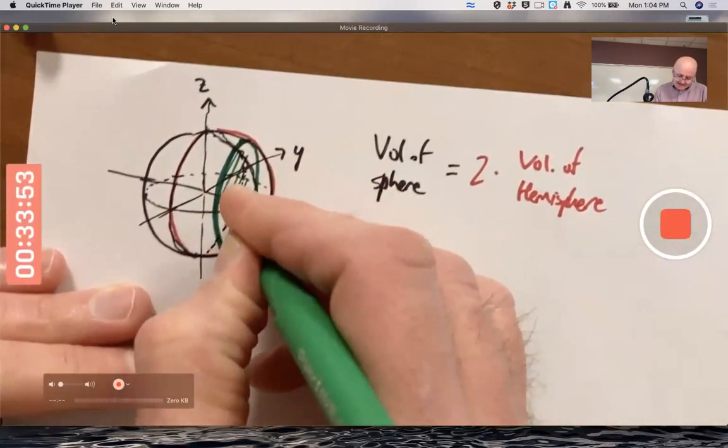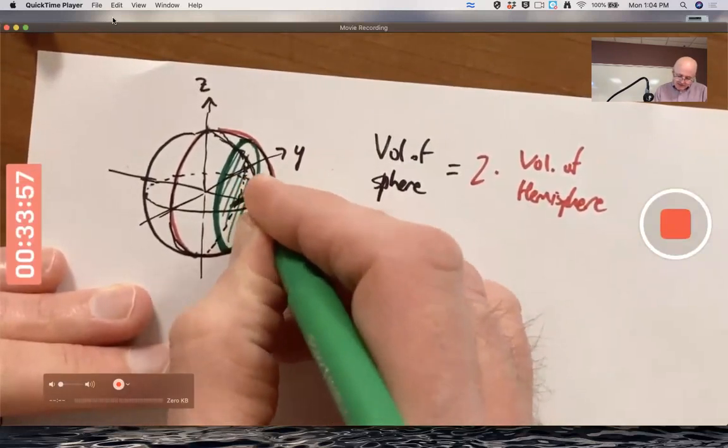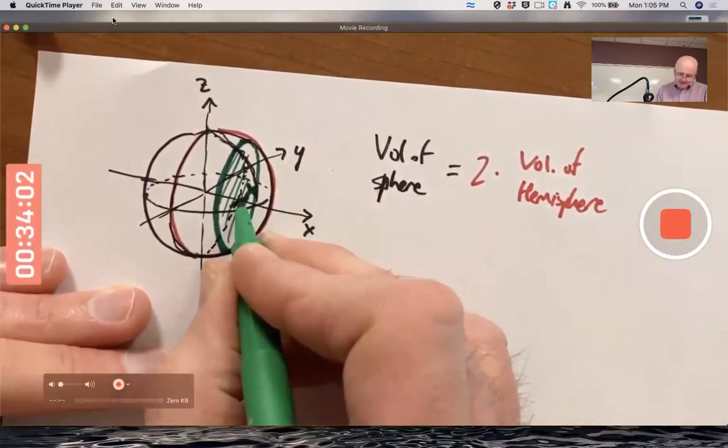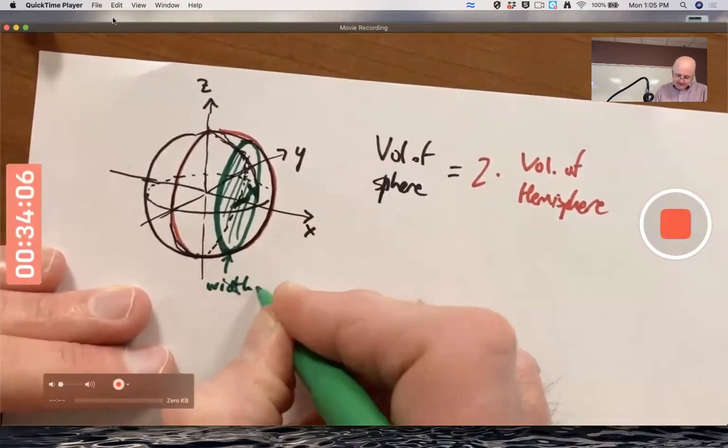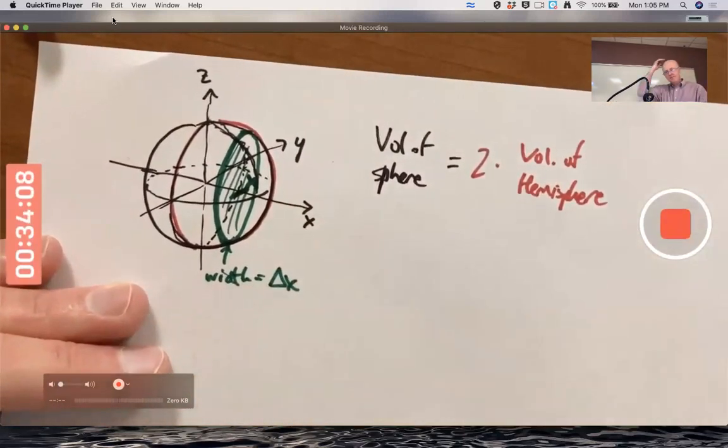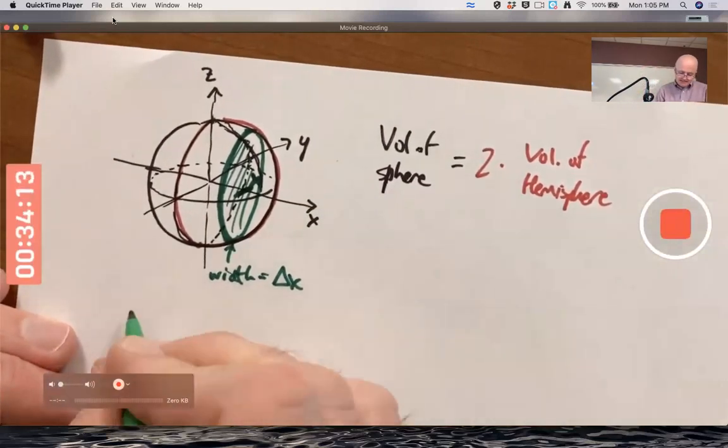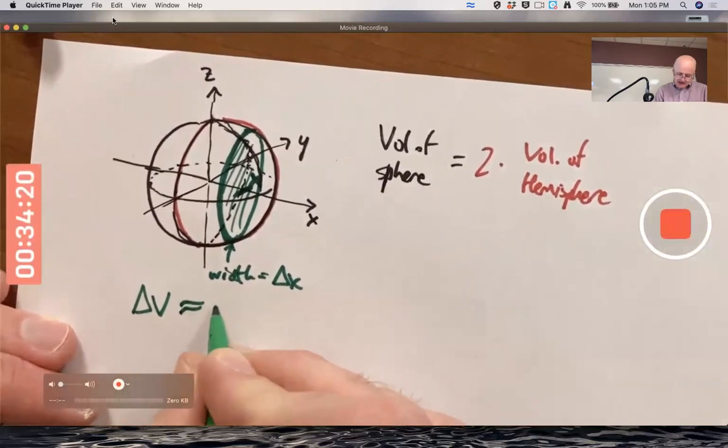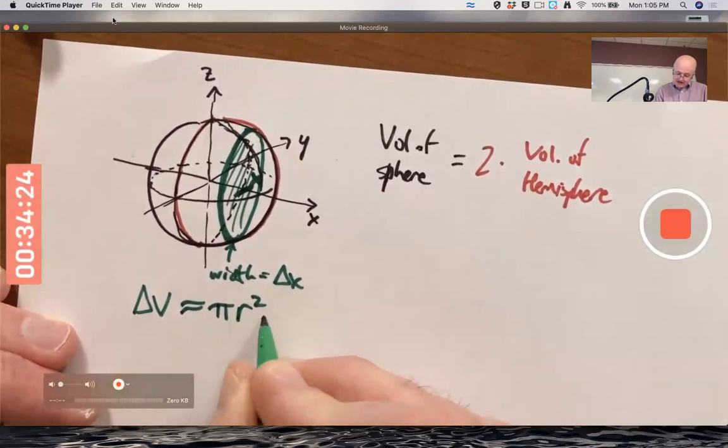at location x. So I'm using x in two ways here, both as the label for the axis and this spot there. And a width, small width Δx. The small volume of this thin wafer, this thin hockey puck, is going to be approximately π r² times Δx. I'm using capital R again for the radius.